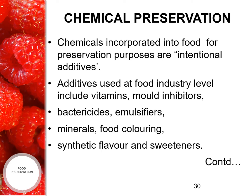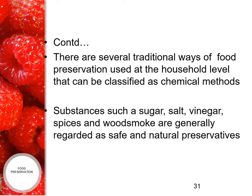The fourth important method in long-term storage is chemical preservation. Chemicals incorporated into food for preservation purposes are intentional additives. Additives used at the food industry level include vitamins, mold inhibitors, bactericides, emulsifiers, minerals, food coloring and sweeteners. There are also traditional ways of food preservation used at the household level classified as chemical methods — substances such as sugar, salt, vinegar, spices and wood smoke are generally regarded as safe and natural preservatives.